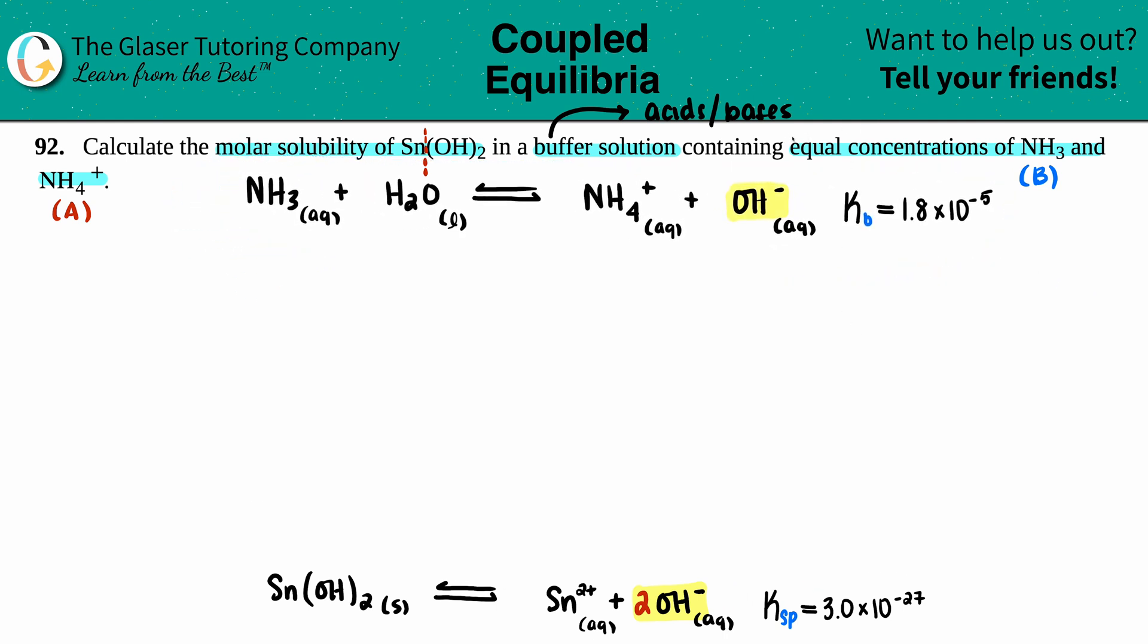All they said was they had equal concentrations. They did not tell us what we had, so just make up a number—it just has to be the same. If you have equal concentrations of NH3 and NH4+, maybe we have 1 molarity for NH3.